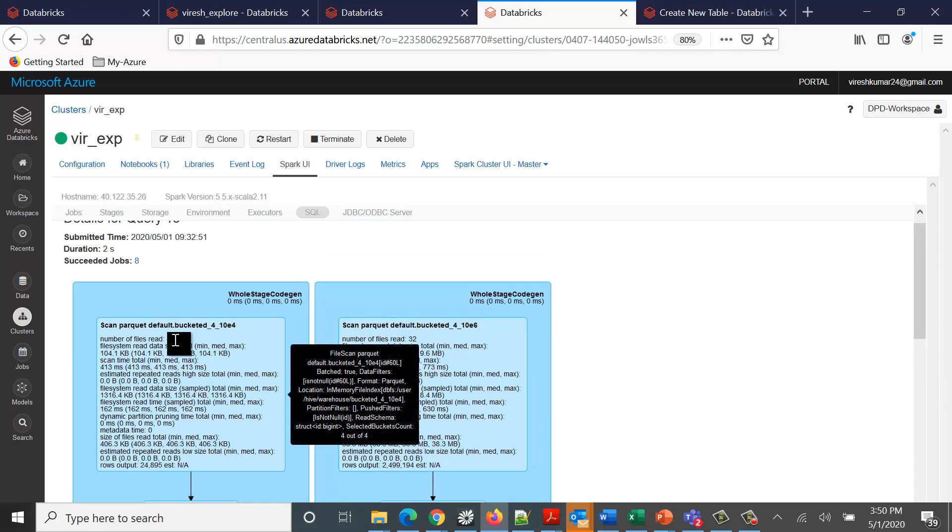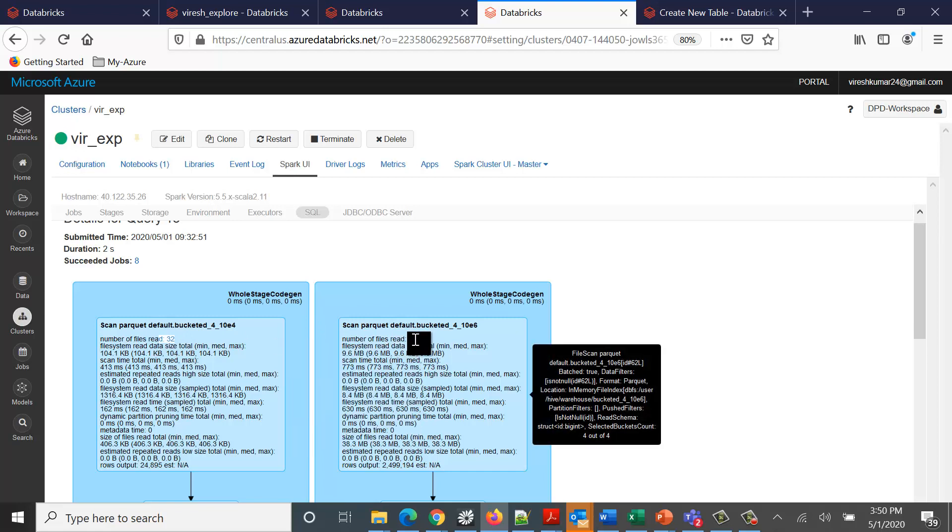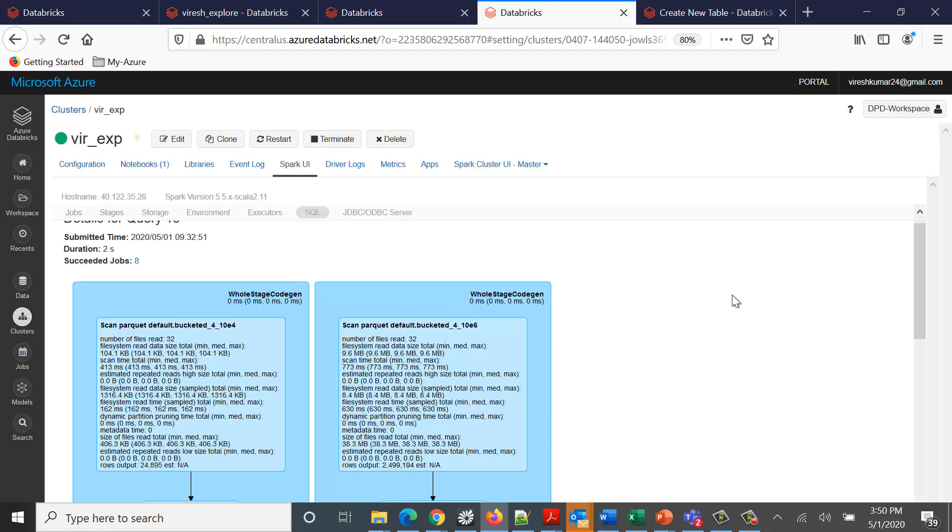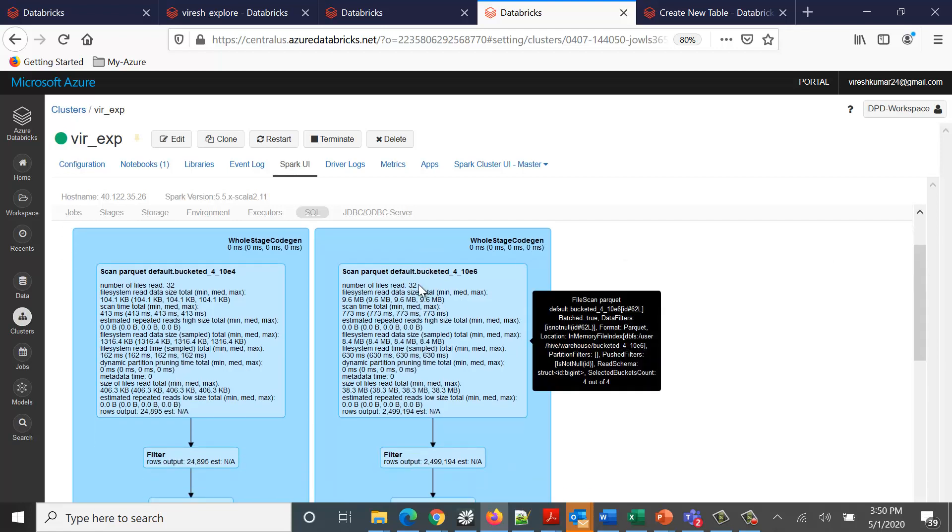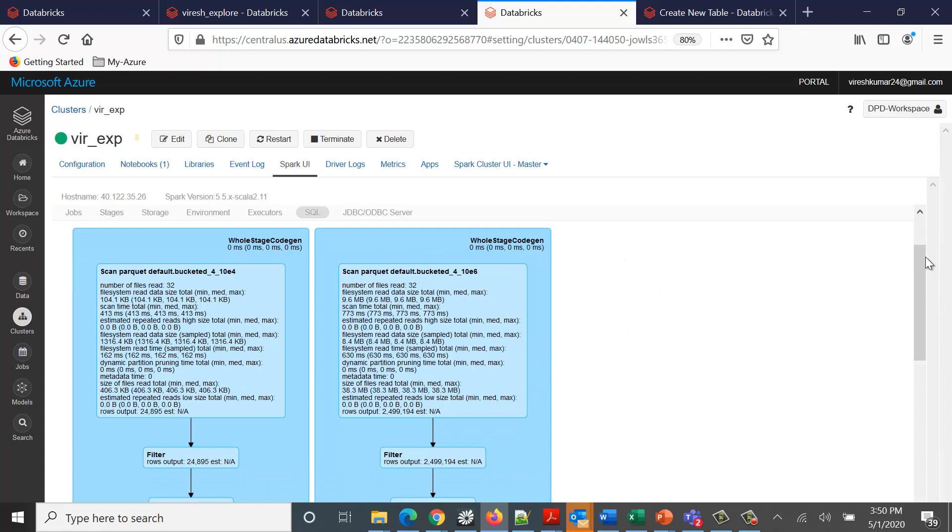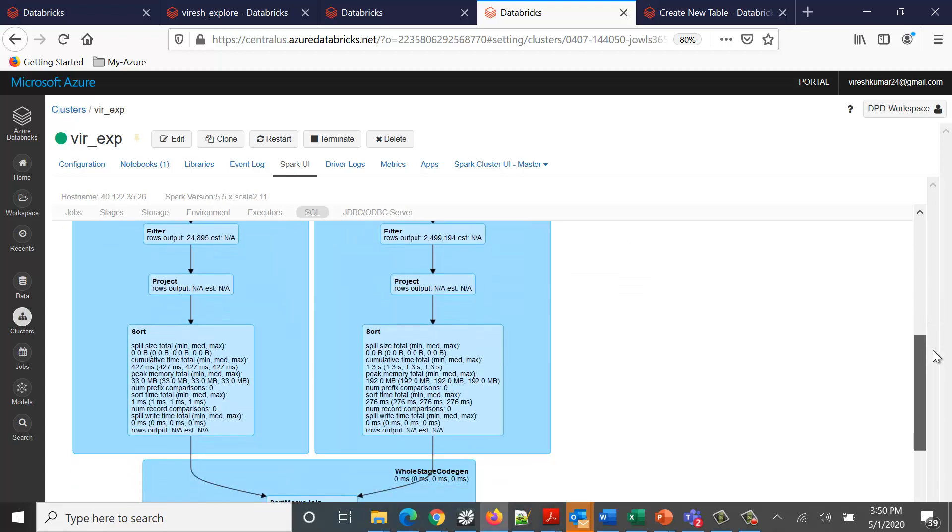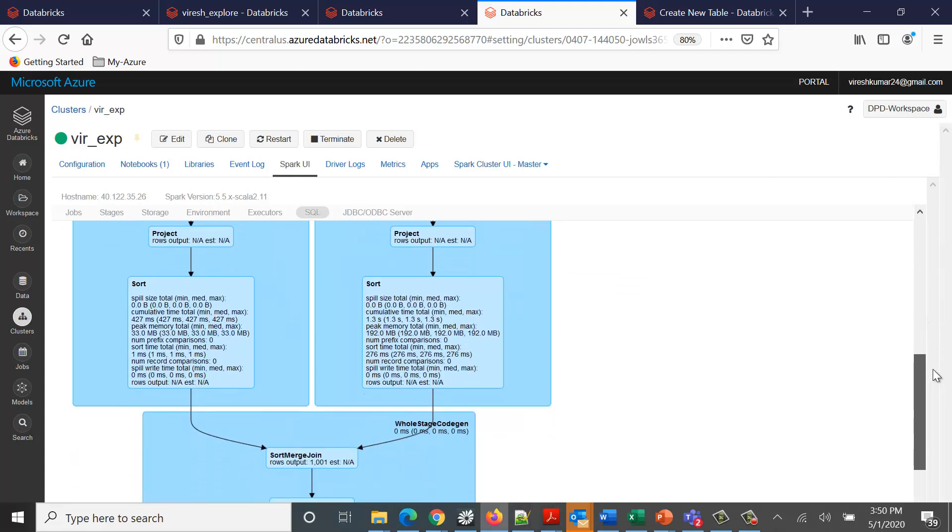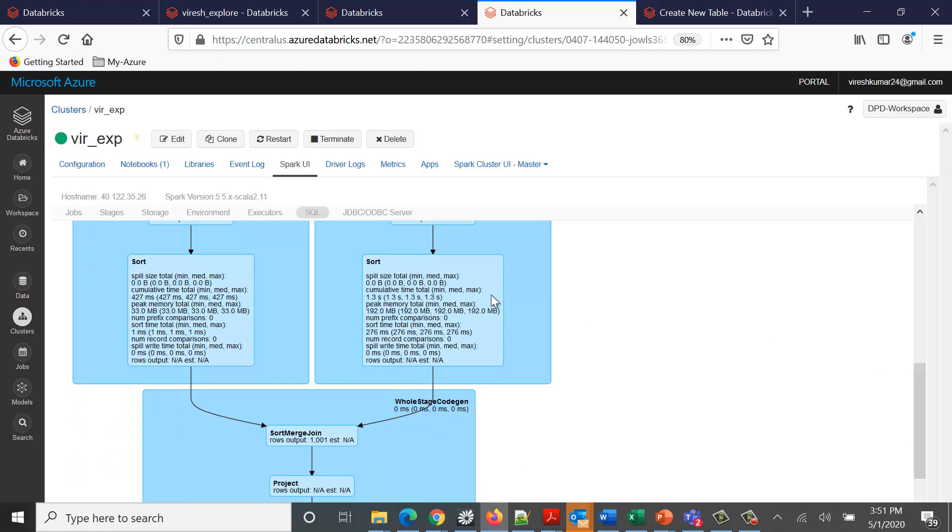If you see a little more details here, you see 32 files are read for each of the two tables involved in the join. This has happened because n cross m. The number of partitions are 8 and the number of buckets we created is 4, so 8 cross 4 equals 32 part files that need to be read from the disk, and those files are read here.